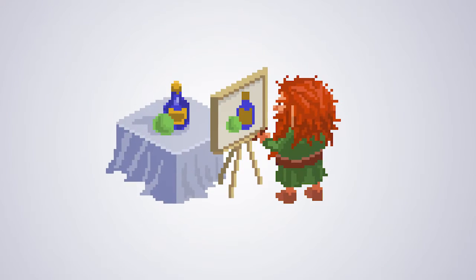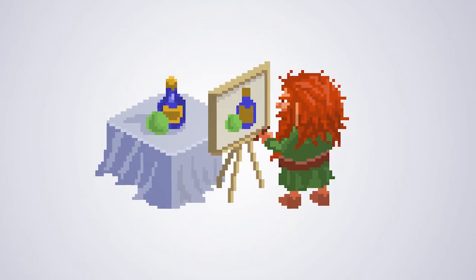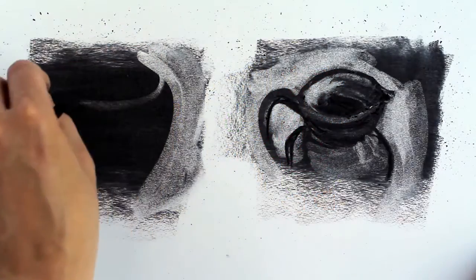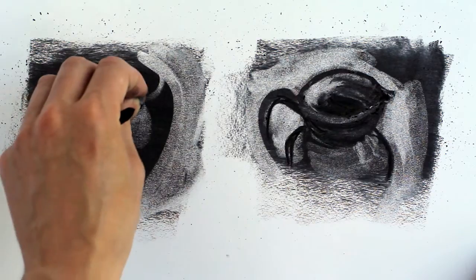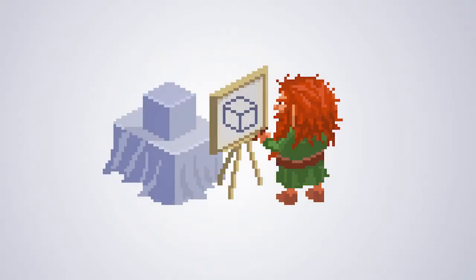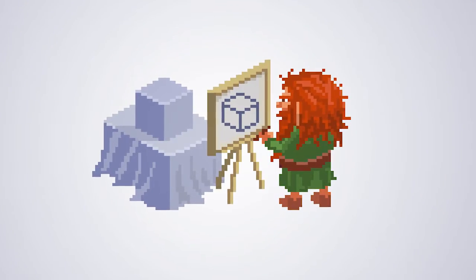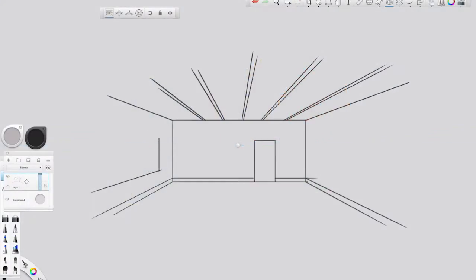We'll begin with still life. You'll start sharpening your observational skills by drawing objects from life in pencil and charcoal. Then we will move into the basics of one, two and three-point perspective.